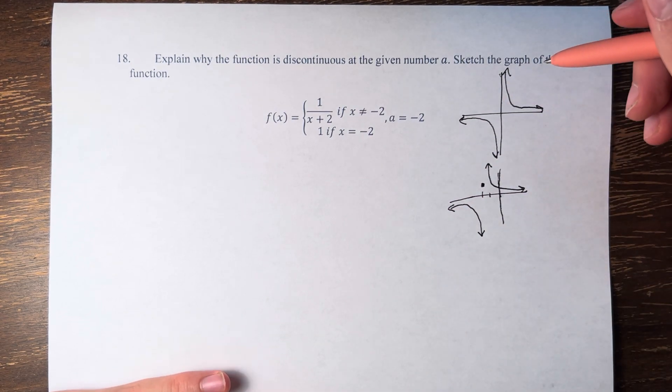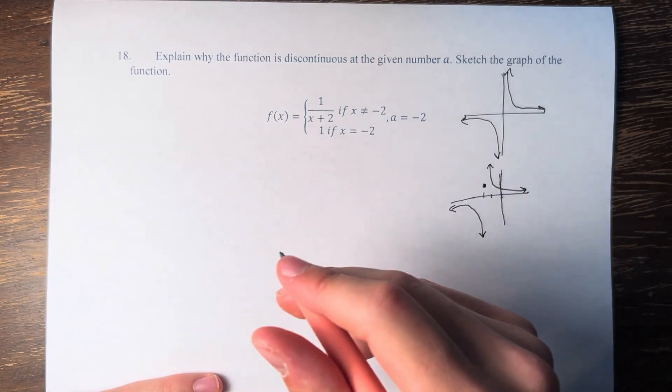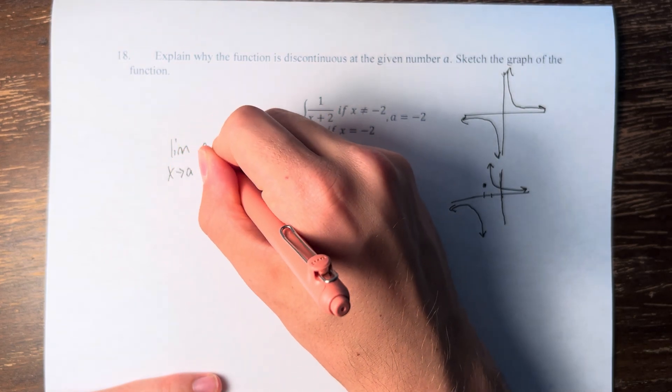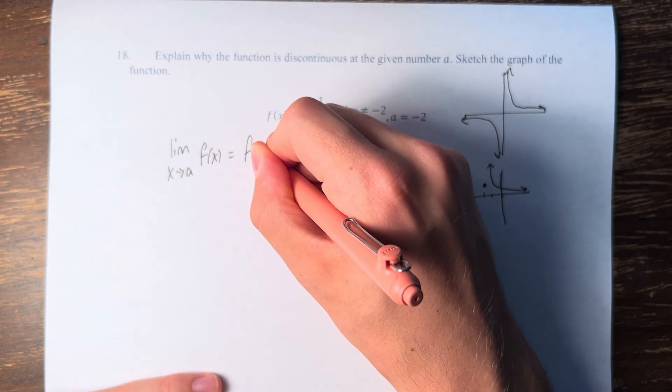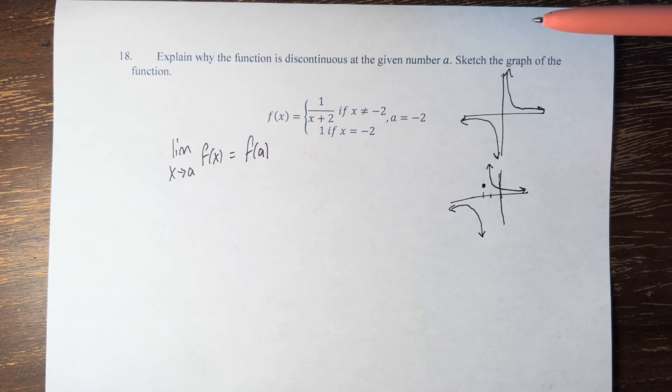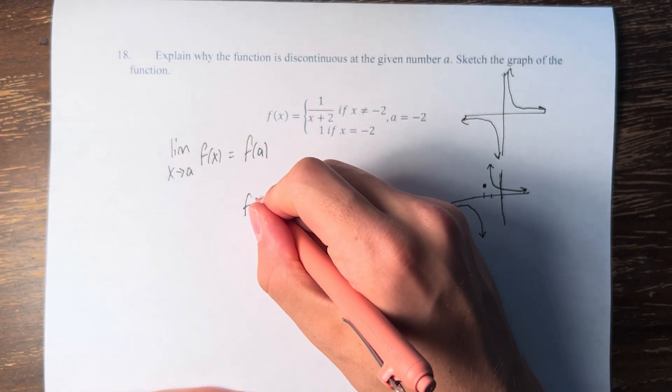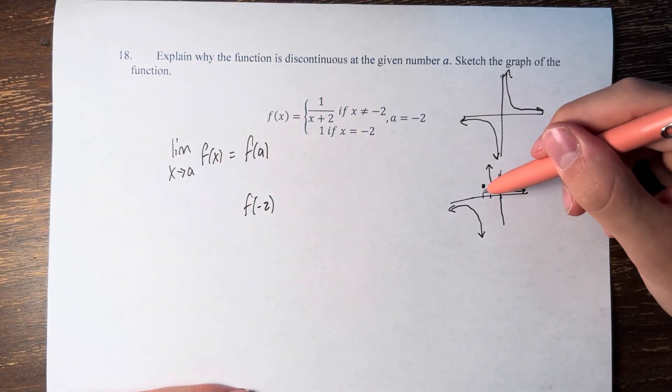Why is the function discontinuous? Well, a function is continuous if the limit as x approaches a of f of x is equal to f of a. Now we can see that this is the value of f of negative 2. This is equal to 1.